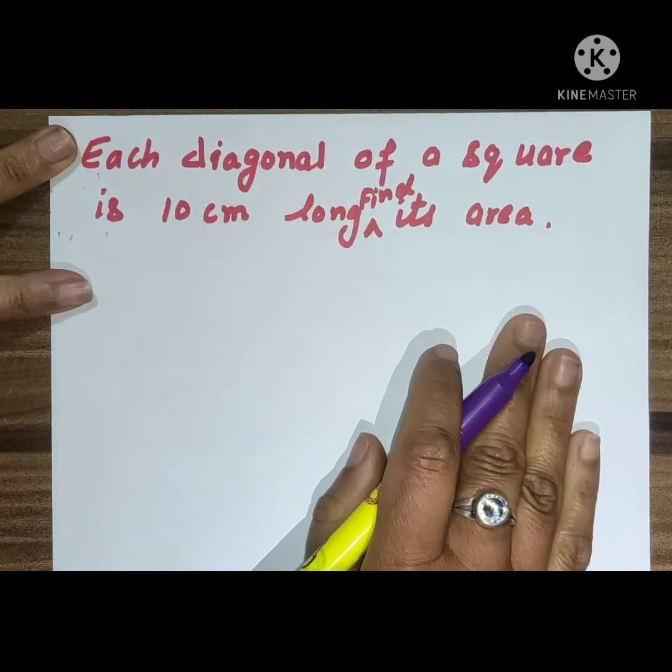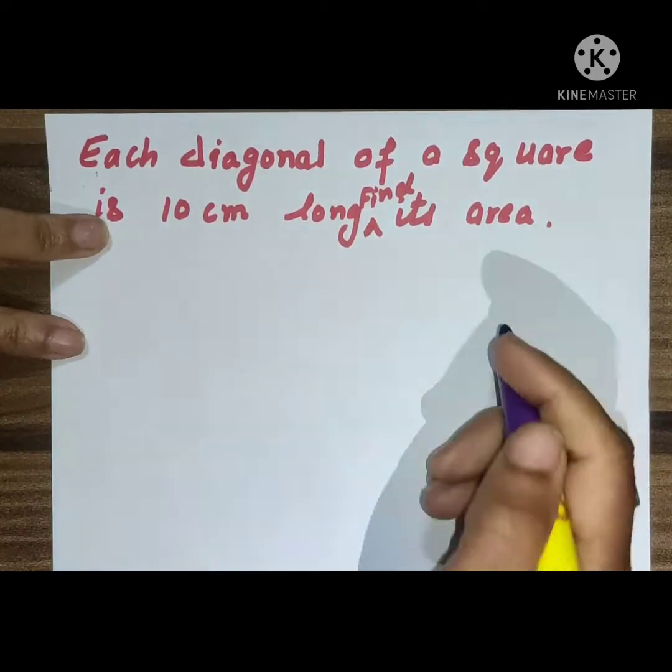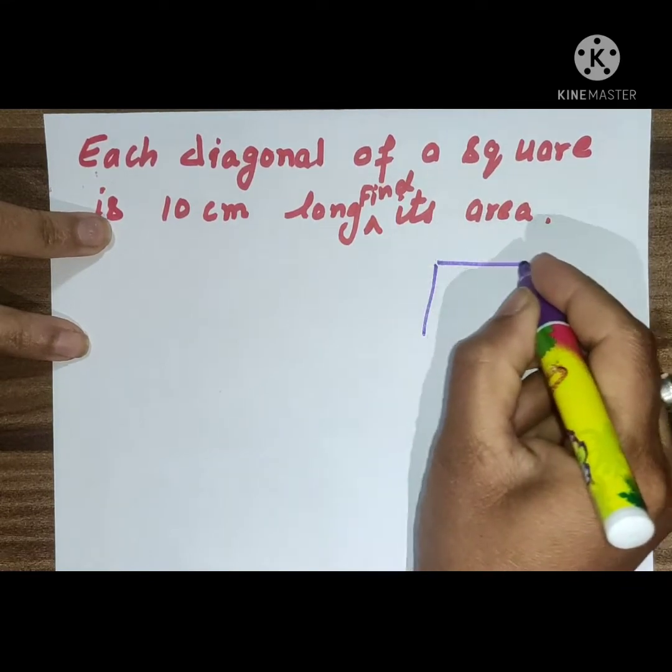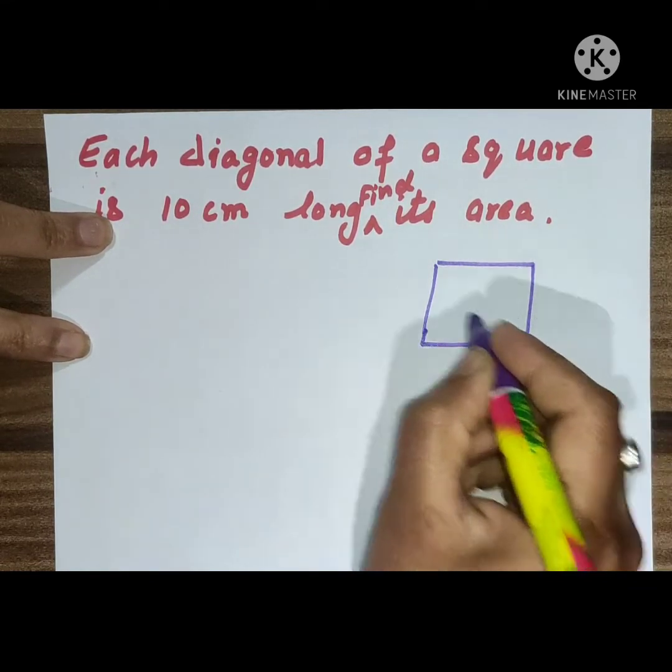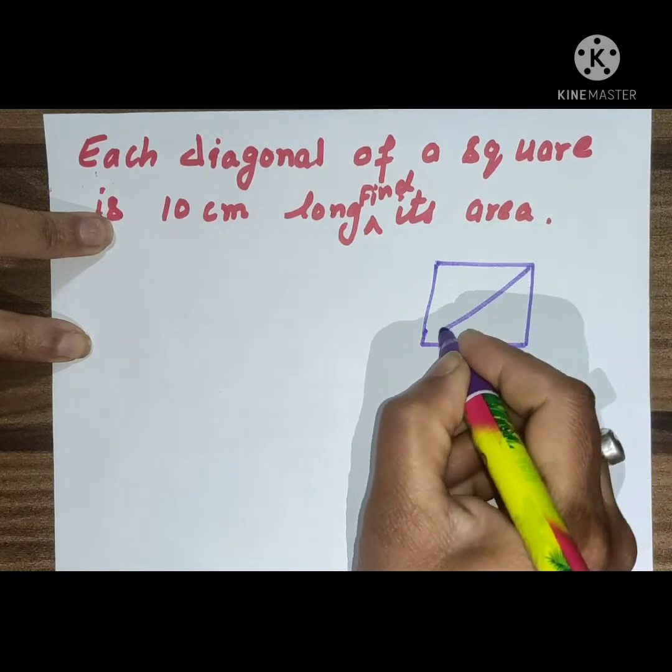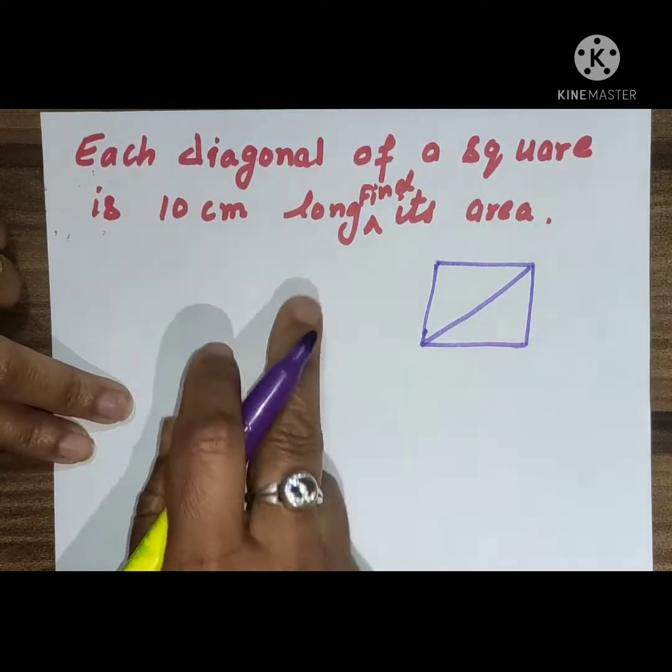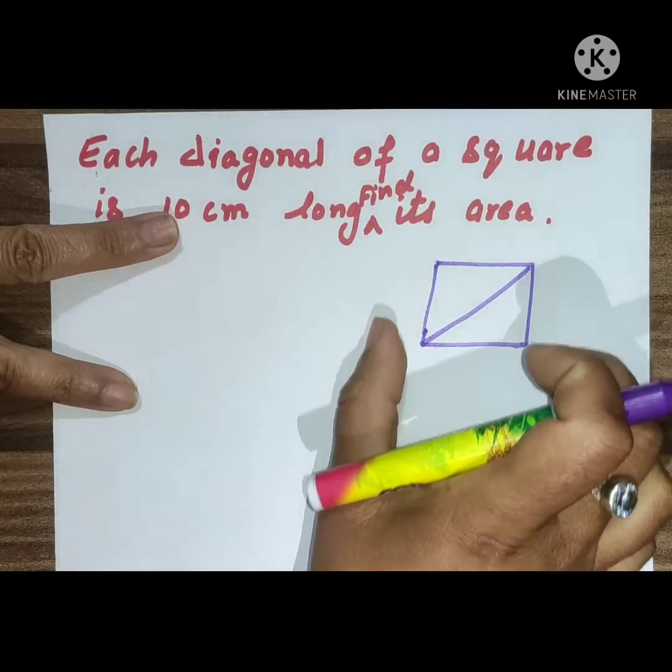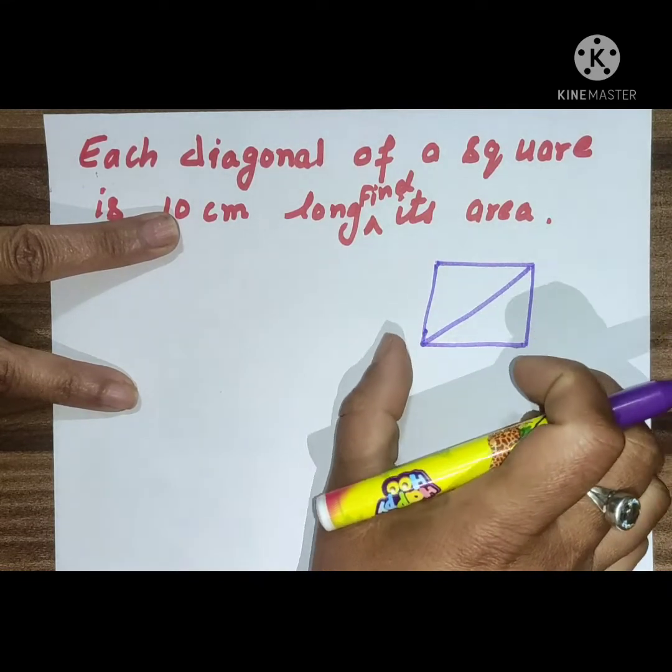So students, here the side of the square is not given, only the diagonal of the square is given. So through this diagonal, we will find out the area of the square. First of all, we will make a square.